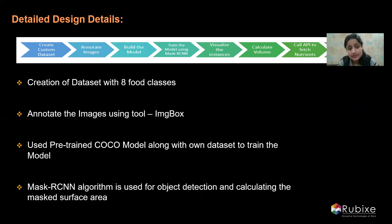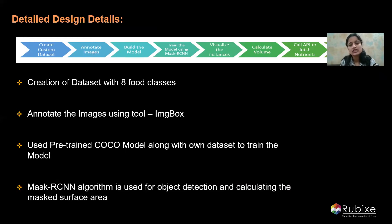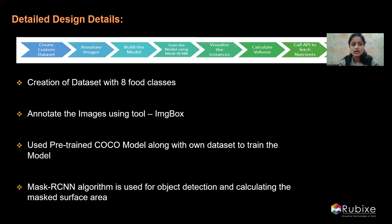We created a custom dataset and annotated the images using the ImgBox tool. We then built and trained the model using the Mask RCNN algorithm. Mask RCNN creates a mask around your food, and once you have a mask you can extract the surface area of the food item on your plate. From the surface area we calculate the volume, which in turn helps determine the weight of the food. Once we have the weight, we send it to the API and calculate the nutritional values to be displayed.